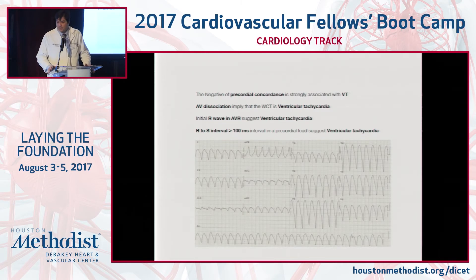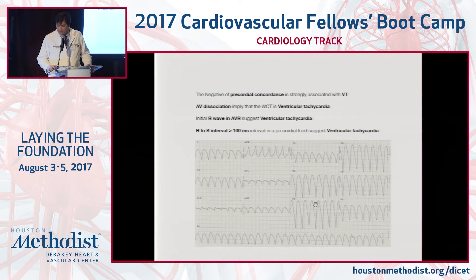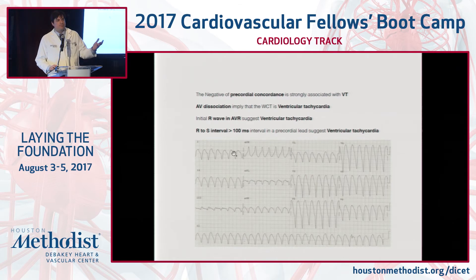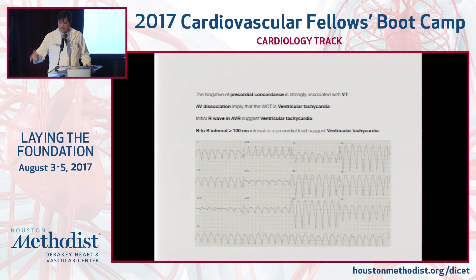Negative precordial concordance strongly suggests ventricular tachycardia rather than positive concordance, because the energy goes from the apex to the base. Positive concordance — energy going from base to apex — could be SVT or VT. We also look at AV dissociation: P-waves marching out independent of the QRS. An initial R-wave positive in AVR also suggests VT — a very tall positive AVR means the energy comes from apex to base, which no SVT can produce. RS interval greater than 100 milliseconds is also a VT criterion.